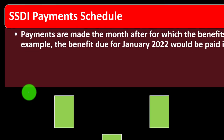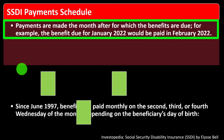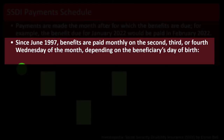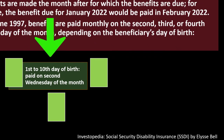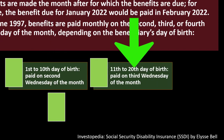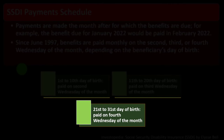SSDI payments are made the month after the month for which benefits are due. For example, the benefit due for January 2022 would be paid in February 2022. Since June 1997, benefits are paid monthly on the second, third, or fourth Wednesday of the month depending on the beneficiary's day of birth: the 1st–10th on the second Wednesday, the 11th–20th on the third Wednesday, and the 21st–31st on the fourth Wednesday.